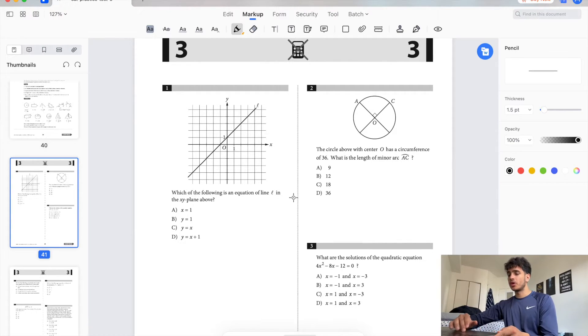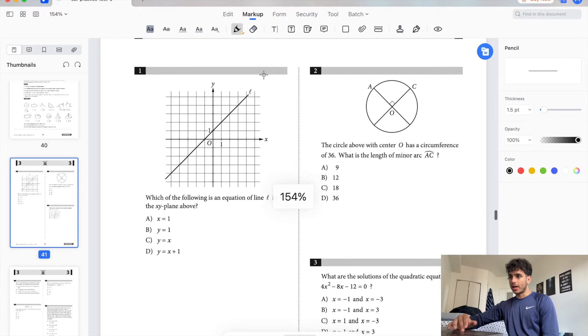Starting off with number one, which of the following is the equation of line L in the xy plane above? So we have line L. We see that it's a positive slope because it's increasing. Y equals 1 is a horizontal line at 1. X equals 1 is a vertical line at 1. So we know it's not A or B.